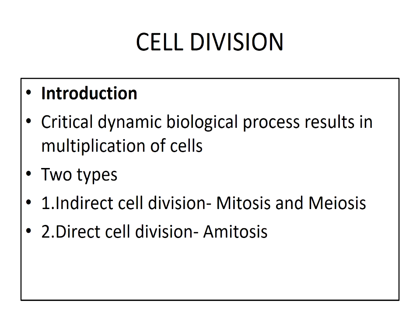In amitosis, there are no definite stages like prophase, metaphase, anaphase, and telophase. Amitosis is common in unicellular organisms like amoeba. First, the nucleus elongates and becomes dumbbell-shaped. Then the wall ingrowth starts from the mid region, and the nucleus divides into two. This is followed by division of the cytoplasm, resulting in the formation of two daughter cells. It is a simple process in the case of direct cell division.